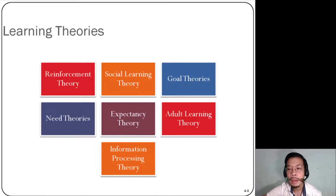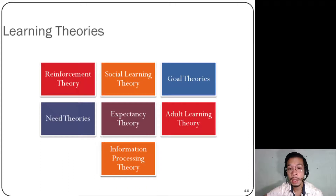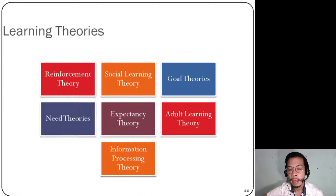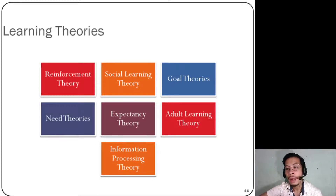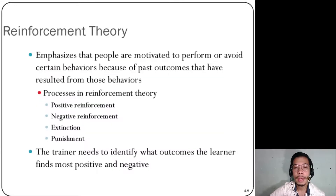Here are the most common learning theories utilized in training and development: reinforcement theory, social learning theory, goal theories, need theories, expectancy theory, adult learning theory, and information processing theory. These won't be discussed one by one in depth, because this is training and development — not a theories of learning course — but we will apply these learning theories in the context of employee training and development.